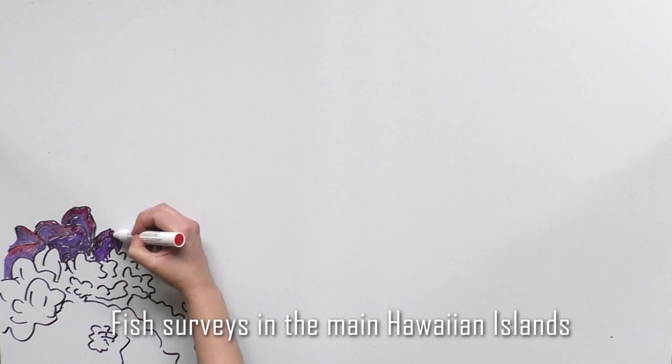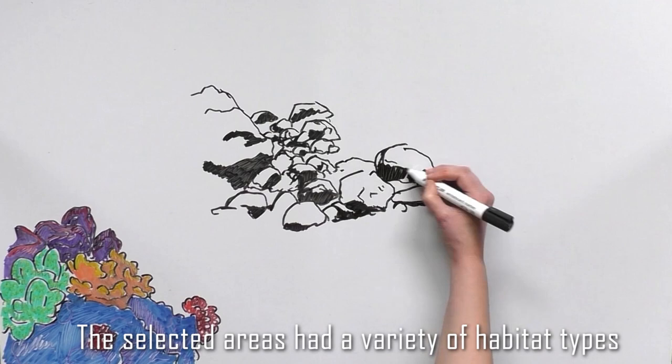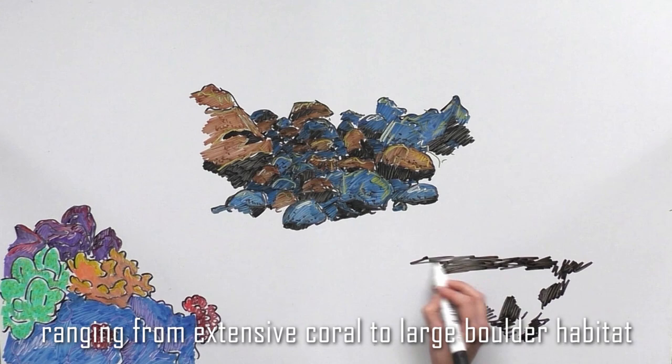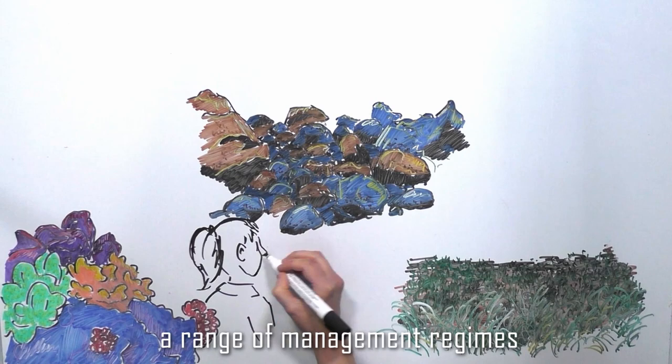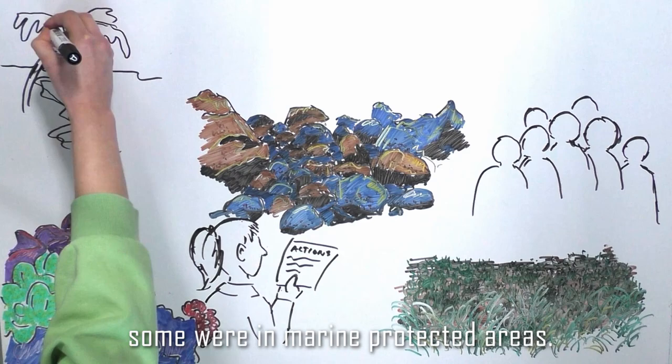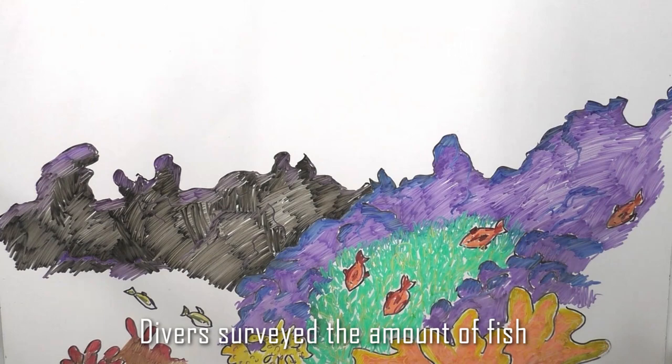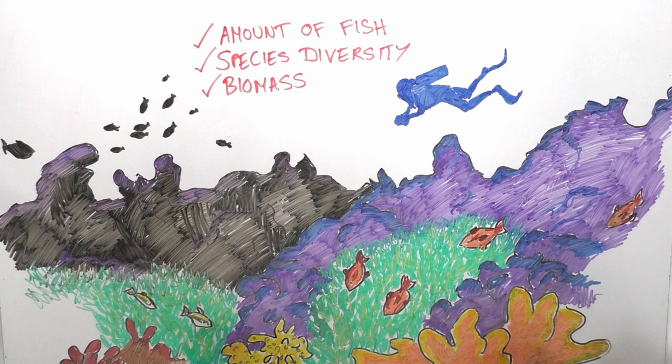Fish surveys in the main Hawaiian islands were conducted at 625 sites. The selected areas had a variety of habitat types ranging from extensive coral to large boulder habitat to seagrass beds, and also represented a range of management regimes, human population pressures, and shoreline exposure. Some were in marine protected areas. Divers surveyed the amount of fish, species diversity, and biomass in each of these 625 sites.